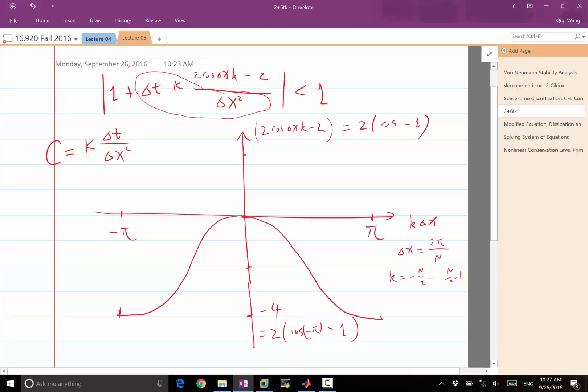Once I multiply this number, which can range from minus 4 to 0, with the CFL number and add by 1, I want to make sure this number stays within the range of the circle.